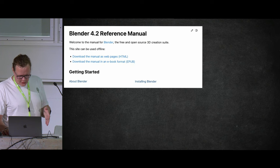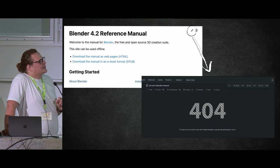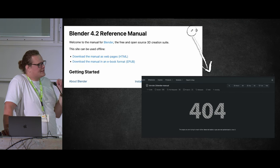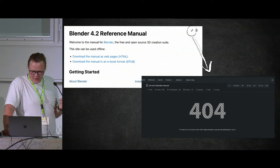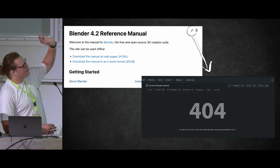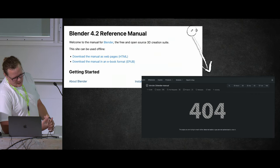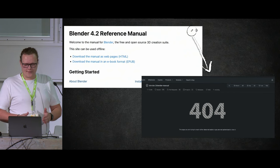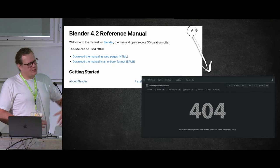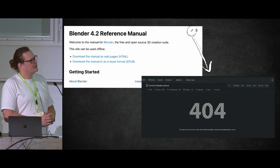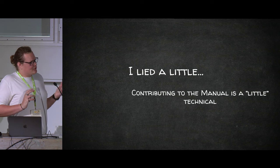If you were paying attention, you may have noticed there's a little Edit button on the manual page. If you click it, you'll get a 404 — and this is not a bug. This is a way for people with commit access to quickly update the manual. Commit access is the Blender Foundation saying 'we trust you enough to contribute directly.' Most people will not have it.